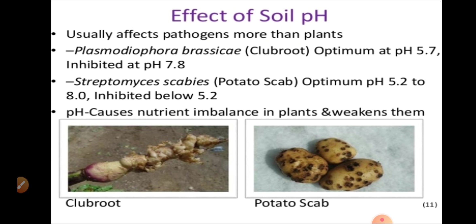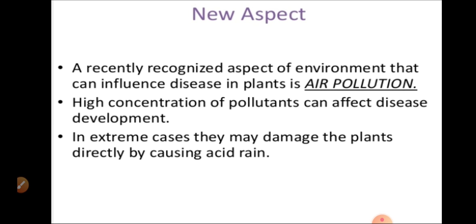The effect of soil pH — we can see examples of potato scab and club rot. Soil pH usually affects pathogens more than plants. The soil pathogen Plasmodiophora brassicae, which causes club rot disease, has an optimum at pH 5.7 and is inhibited at pH 7.8. Streptomyces scabies, which causes potato scab disease, has an optimum pH of 5.2 to 8.0 and is inhibited below 5.2. pH also causes nutrient imbalance in plants and weakens them.